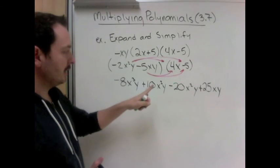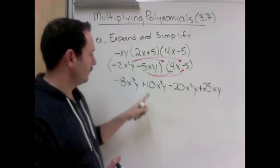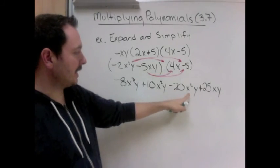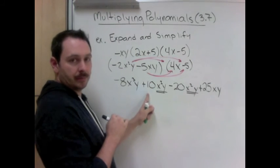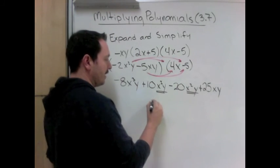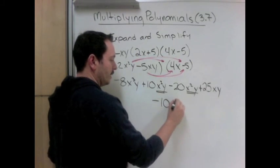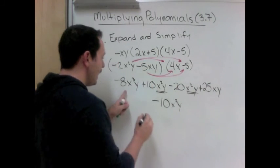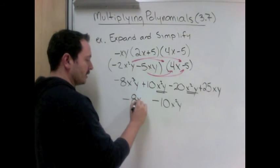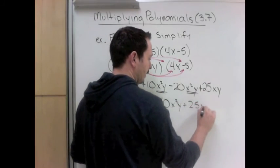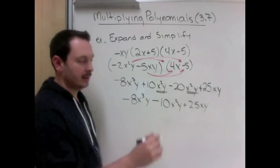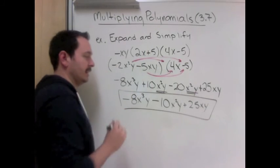And now are there any like terms? Well, we have an x³y. No. x²y? Well, here's an x²y. So we can collect those in the same. We have 10 of them minus 20 of them. So we have minus 10x²y's. And the parts that did not have anything in common come along for the ride. And there is our answer.